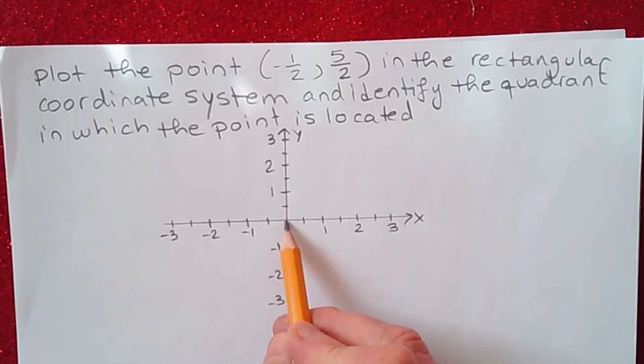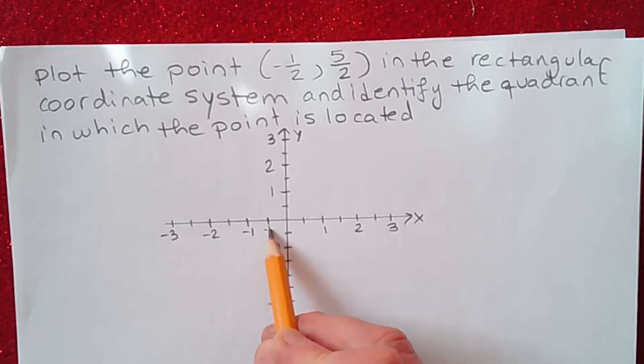Negative one-half is halfway between zero and negative one. So this is in the middle. This is negative one-half, so x is negative one-half.